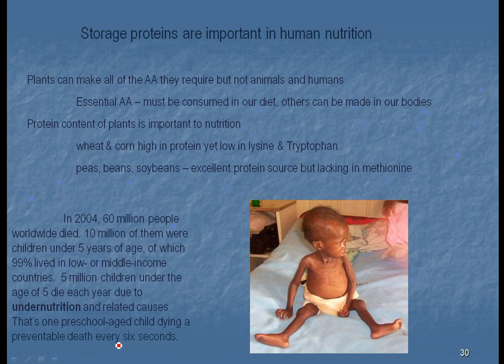People, through trial and error — through their shamans, through their medicine men — have learned that you need to combine certain foods together. Wheat and corn, for example, are high in protein but low in lysine and tryptophan. Beans, peas, and soybeans are an excellent protein source, but they'll have methionine. So different cultures have learned that we need to put these together — we need to have corn and beans together, we need to have a combination of wheat and peas.